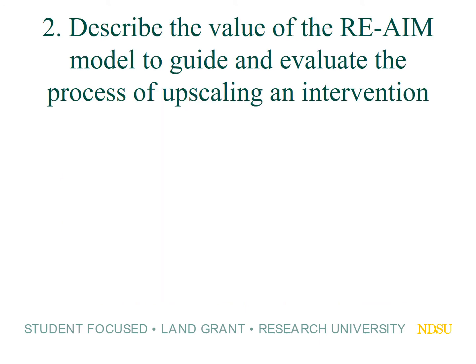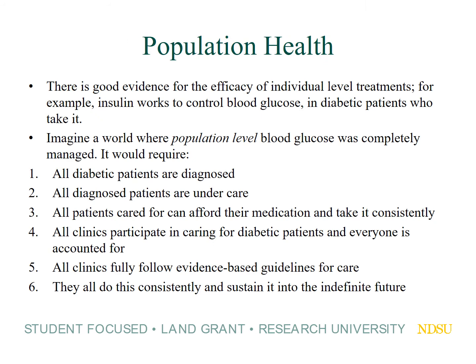The second objective in this presentation is to describe the value of the RE-AIM model to guide and evaluate upscaling of interventions. There's an increased appreciation in healthcare for population health improvements in addition to individual patient-level improvements. We know there's good evidence for the efficacy of individual-level treatments — for example, insulin works to control blood glucose in diabetic patients who take it. But imagine a world where population-level blood glucose was completely managed. This would require all diabetic patients being diagnosed, all those diagnosed receiving care, all those cared for being able to afford and consistently take their medication, and all clinics participating in caring for patients this way.